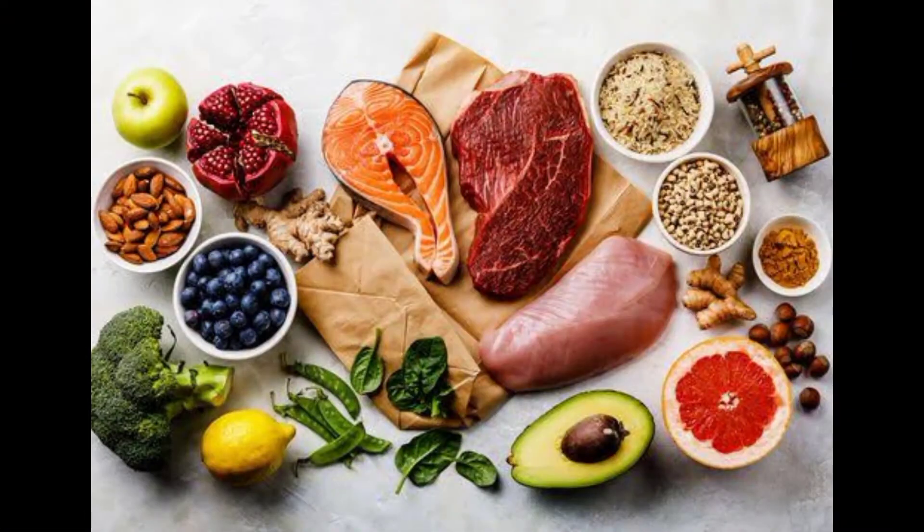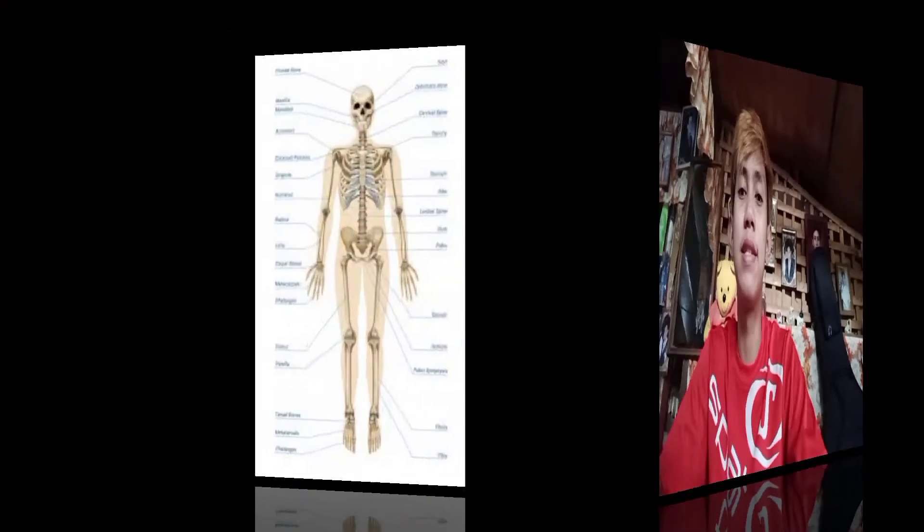In our life we need survival needs, and one of those is food. Most plant foods are rich in vitamins, carbohydrates, and minerals, whereas animal foods are rich in proteins and fats.